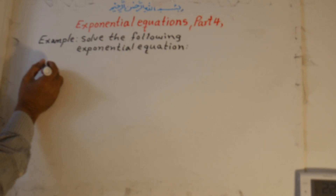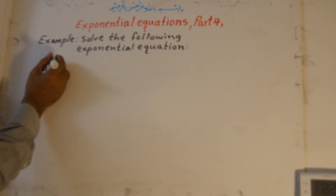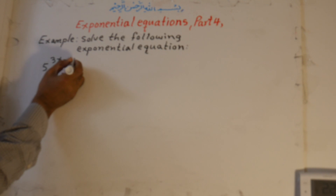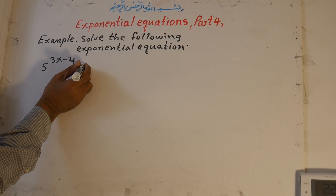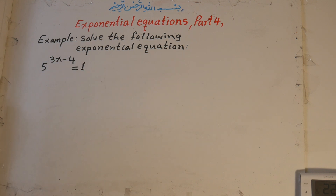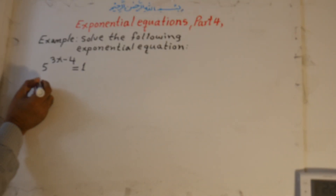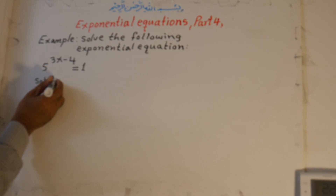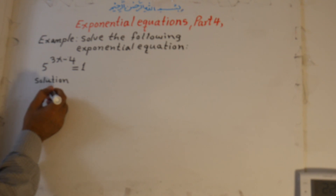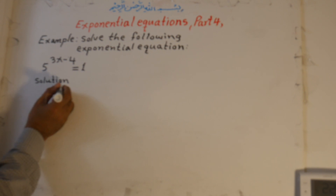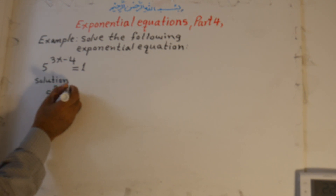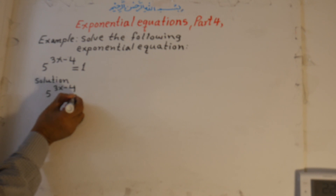Solve the following exponential equation: 5 to the power of 3x minus 4 is equal to 1.